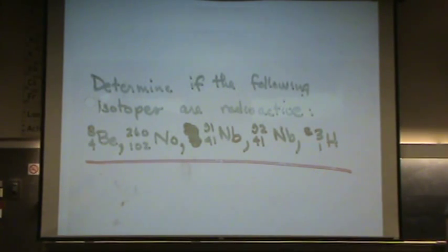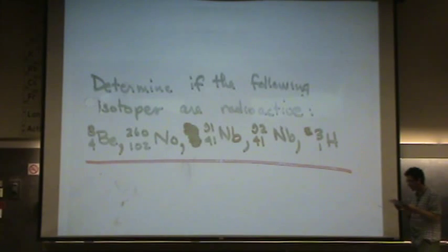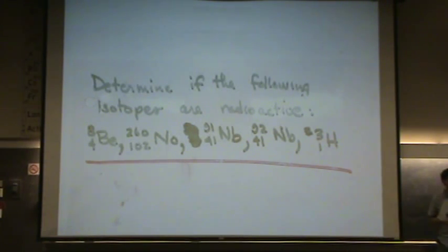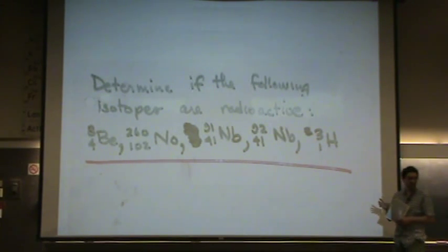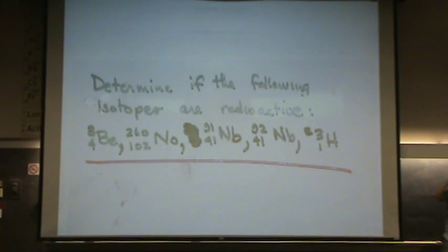Nobelium is number 102, way down on the periodic table — you can find it in the F block. The number of protons is 102. That's radioactive because Z, the number of protons, is greater than 83, greater than bismuth. That's radioactive.